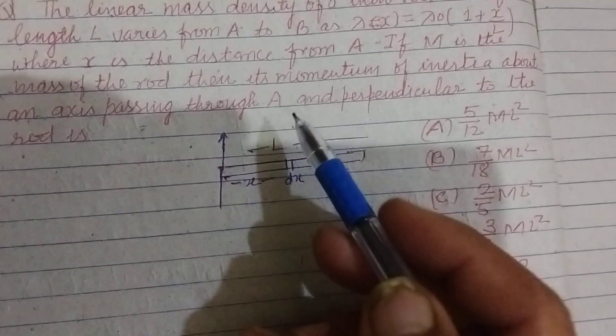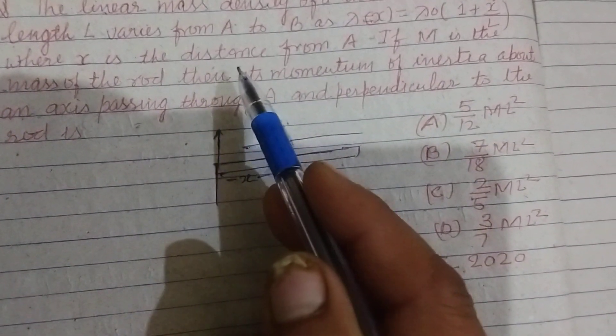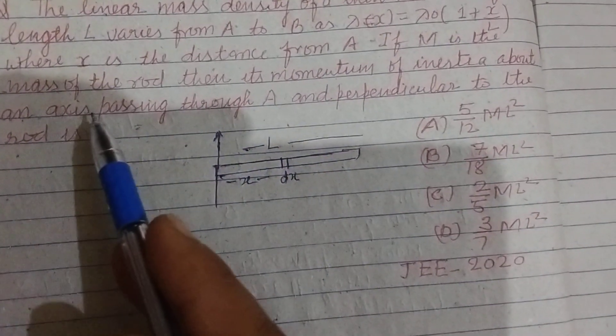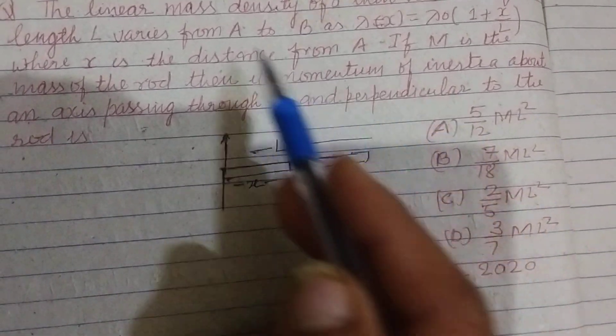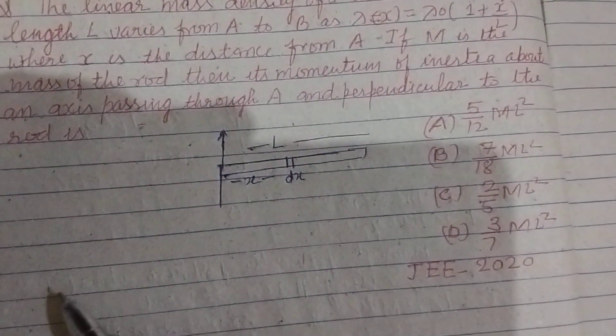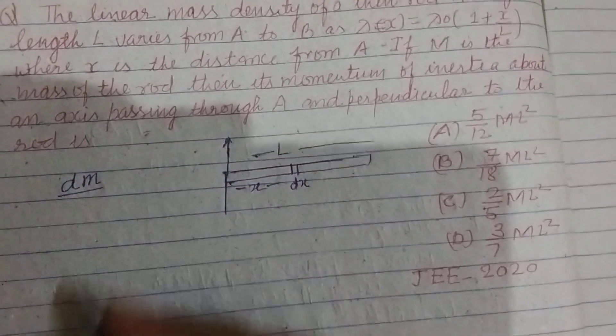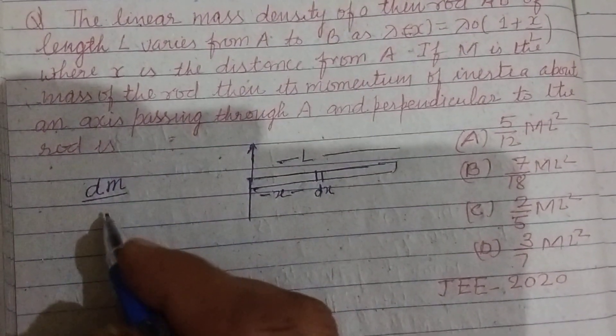Now it is given that lambda is the linear density, linear mass density. You know that when mass is distributed over length, then it is called linear mass density.